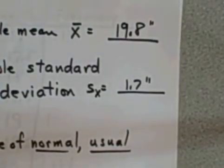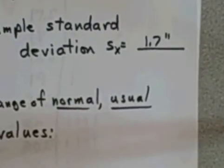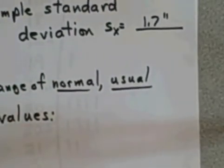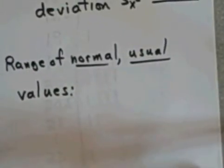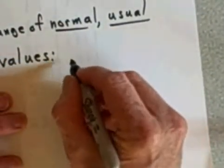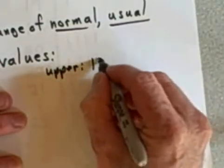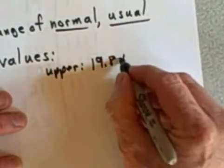I'd like to know how I did in terms of overall based on this sample, so I want to create my range of normal usual values. To create the upper end for this range, we take the mean which is 19.8, and we're going to add to it two times the standard deviation.